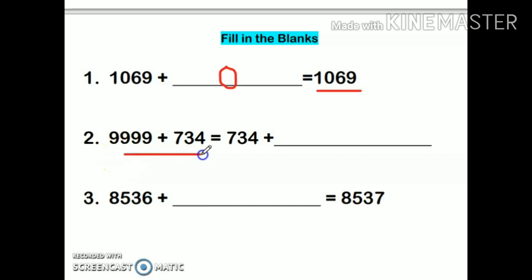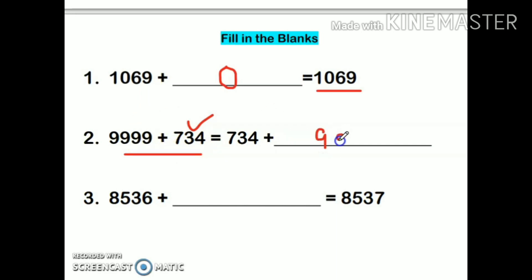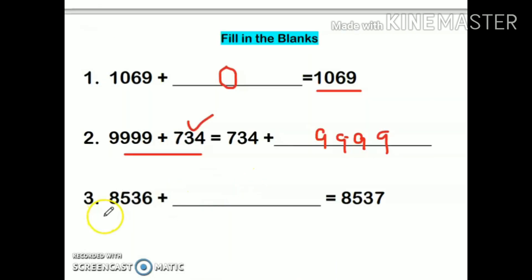Next: 9999 plus 734 equals 734 plus blank. This means the number is given, so my answer will be 9999. This is according to the order property — it means I can write all these numbers in any order.